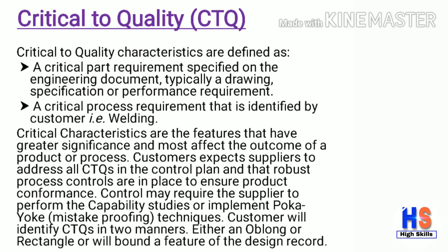It is very important to understand Critical to Quality (CTQ). CTQ characteristics are defined as critical part requirements specified on engineering documents — typically a drawing, specification, or performance requirement — or a critical process requirement identified by the customer, such as welding. Critical characteristics are features that have greater significance and most affect the outcome of a product or process. Customers expect suppliers to address all CTQs in the control plan, with robust process controls in place to ensure product conformance. Control may require the supplier to perform capability studies or implement poka-yoke mistake-proofing techniques. Customers will identify CTQs on drawings using an oblong or rectangle symbol or by bounding a feature on the design record.